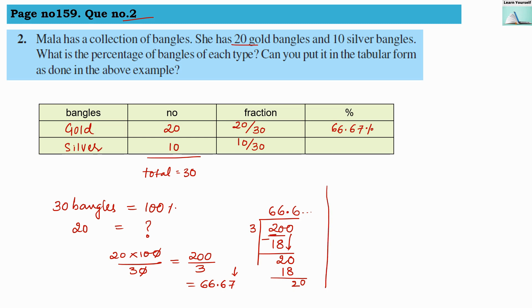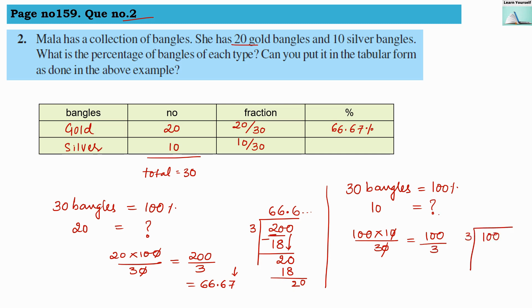For silver bangles: total 30 bangles are 100 percent, so for 10 bangles the percentage is 100 × 10 ÷ 30. The 10s cancel, giving 100 ÷ 3. Dividing: 3 into 10 gives 3 remainder 1, bring down 0, 3 into 10 gives 3 again. This repeats, so we write 33.33 percent for silver bangles.